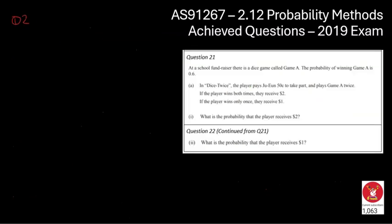We are now on to question number 21. Don't forget these questions all from the video link. So let me know if you can't find that or need it. We've got a fundraiser. They're playing a game called Game A. So something to do with the dice. The probability of winning Game A is 0.6. In dice twice, that's a bit of a tongue twister there. It takes 50 cents to be a part, and you get to play Game A twice. If they win both times, they receive $2. If they only win once, they receive $1.